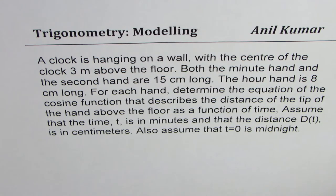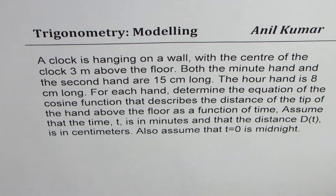A clock is hanging on a wall with the center of the clock 3 meters above the floor. Both the minute hand and the second hand are 15 centimeters long. The hour hand is 8 centimeters long. For each hand, determine the equation of the cosine function that describes the distance of the tip of the hand above the floor as a function of time.